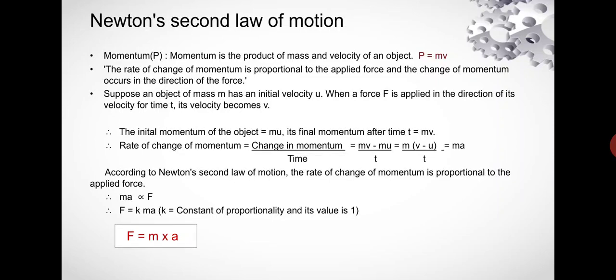Suppose an object of mass m has an initial velocity u. When a force F is applied in the direction of its velocity for time t, its velocity becomes v.